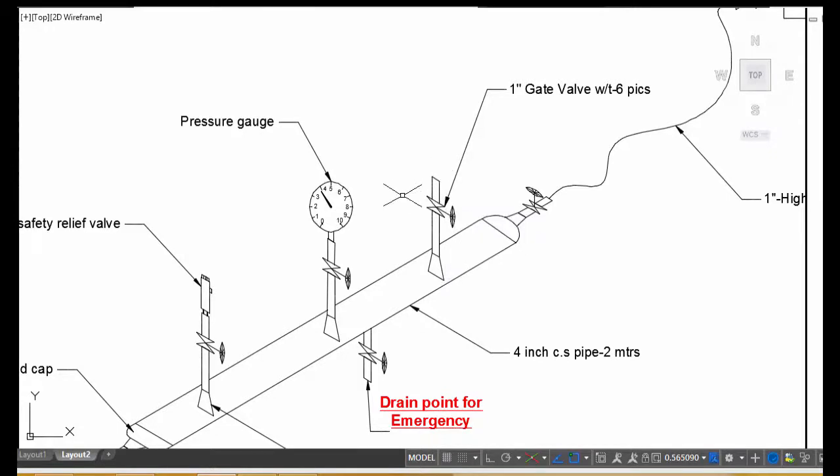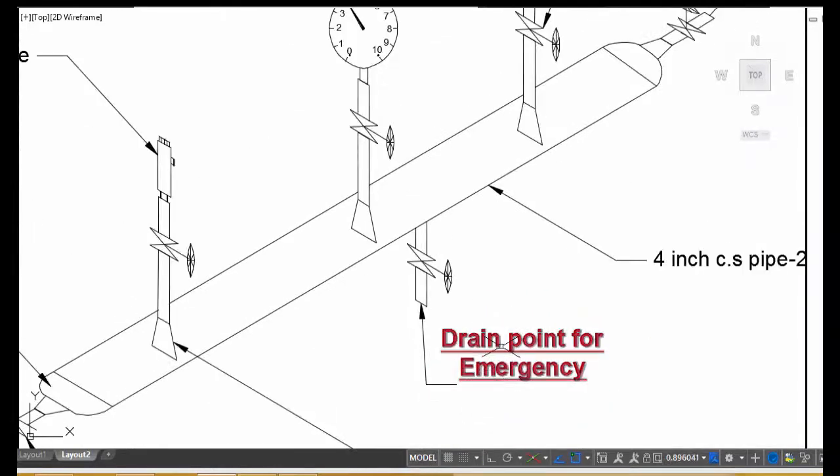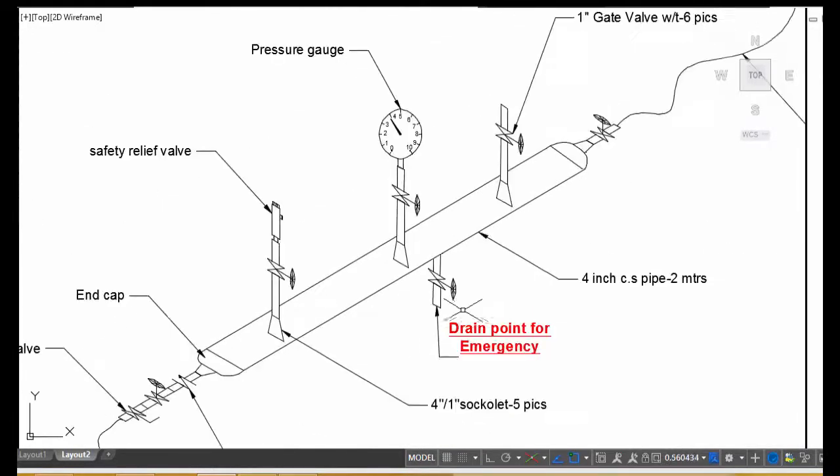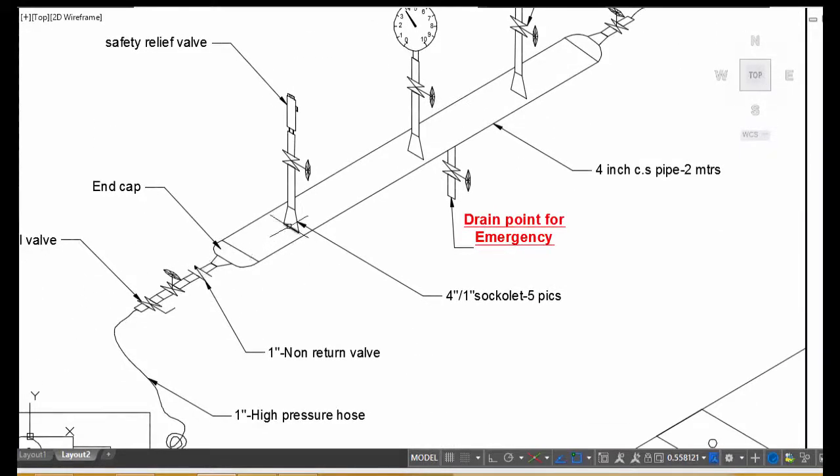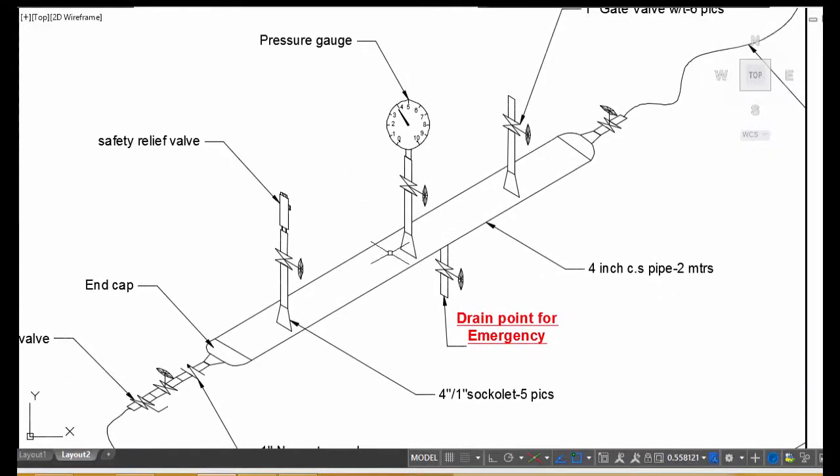One downside drain point for emergency. In case in our line anything happens, any problem, we can open this valve and in emergency we can depressurize. These sacolettes all should be welded here, this end cap also, and on the other end another sacolette.